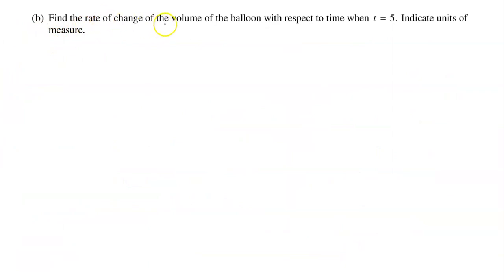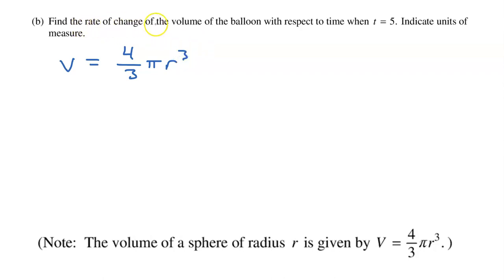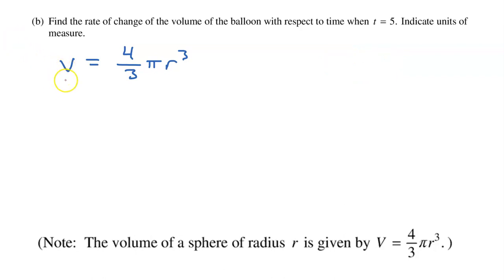Part B: Find the rate of change of the volume of the balloon with respect to time when t equals 5. Indicate the units of measure. What we have here is a related rates problem. We are given that the volume is 4 thirds pi r cubed. We need to find dv/dt, so let's differentiate both sides of this volume equation with respect to t.